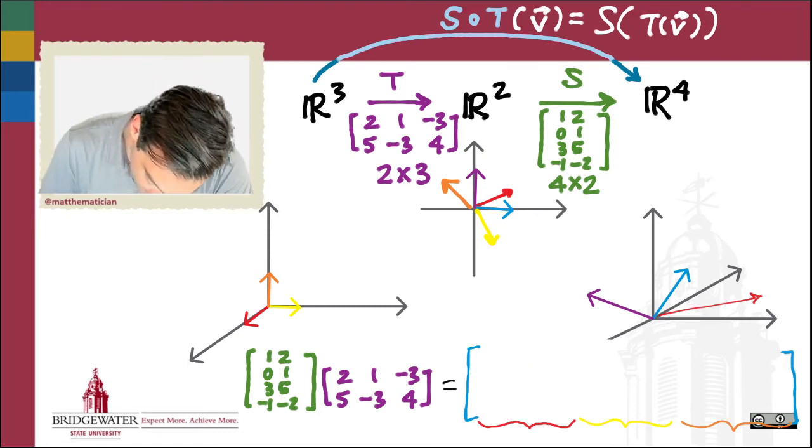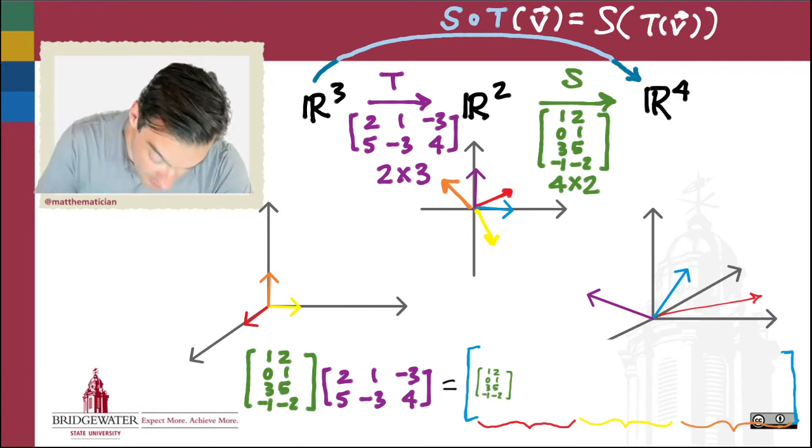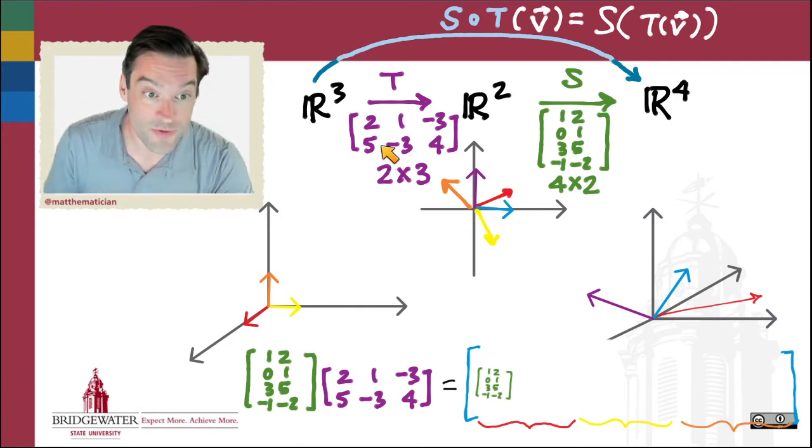Where did that actually come from? The result of applying T to the first standard basis vector gives me exactly the first column of the T matrix. So what I've really done here is multiplied that matrix by the first column of the second matrix.